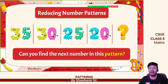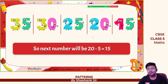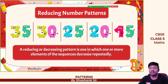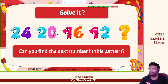Now: 35, 30, 25, 20 — this is a decreasing pattern; 5 is being subtracted each time. So 20 minus 5 gives 15 as the answer. This is called a decreasing or reducing pattern. Next: 24, 20, 16, 12 — the next number is 4 less, so 8 will be the answer.